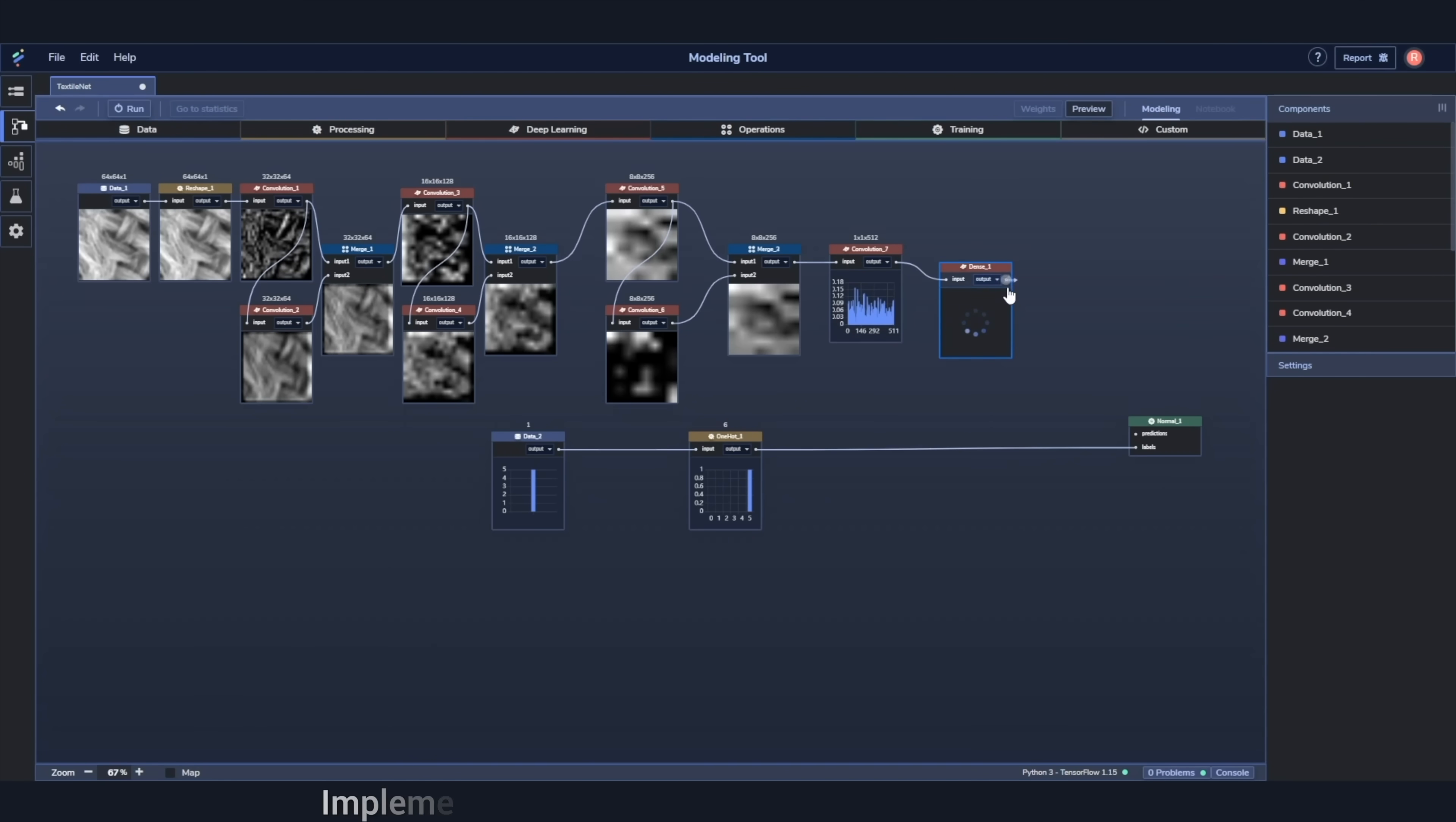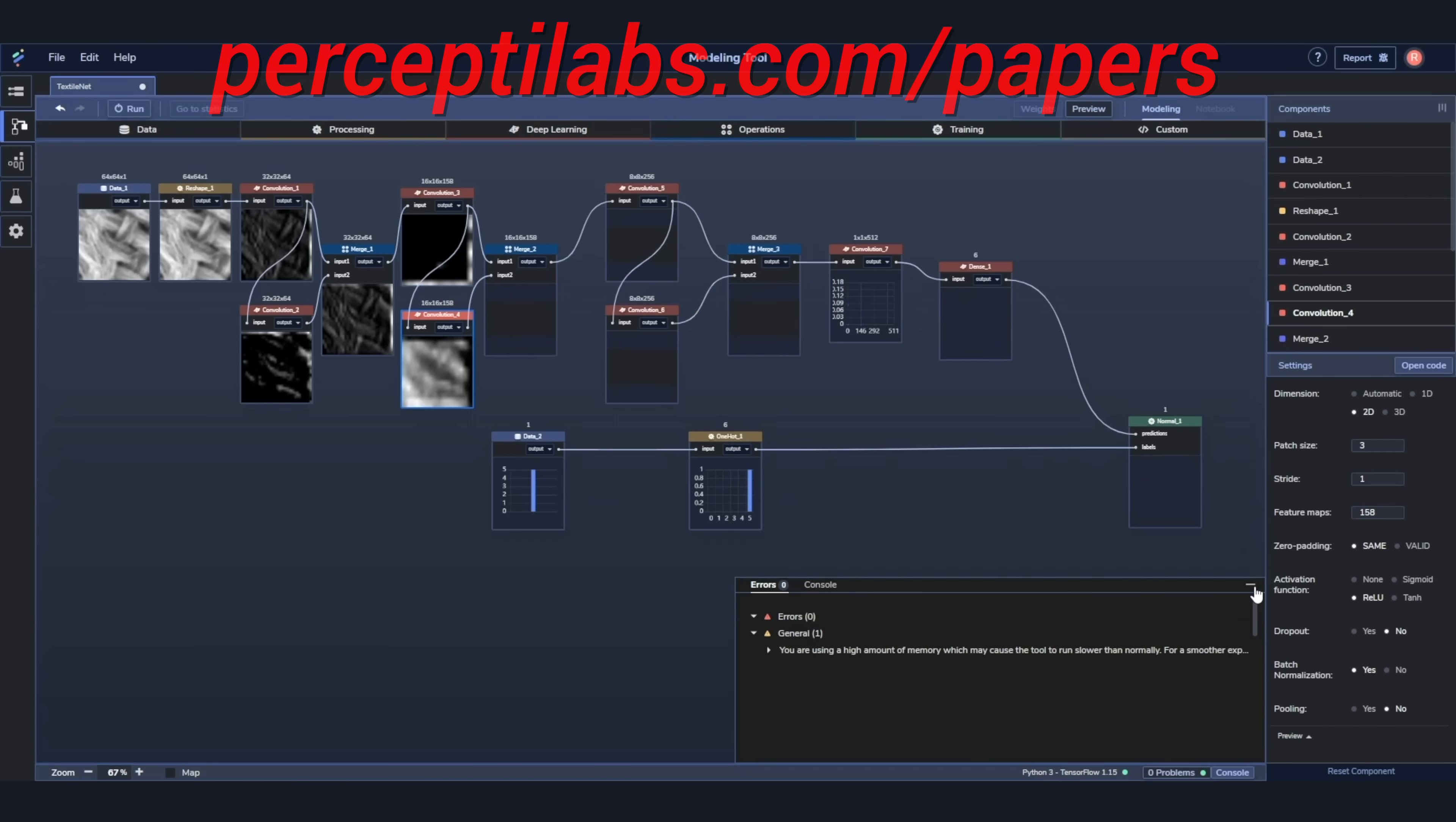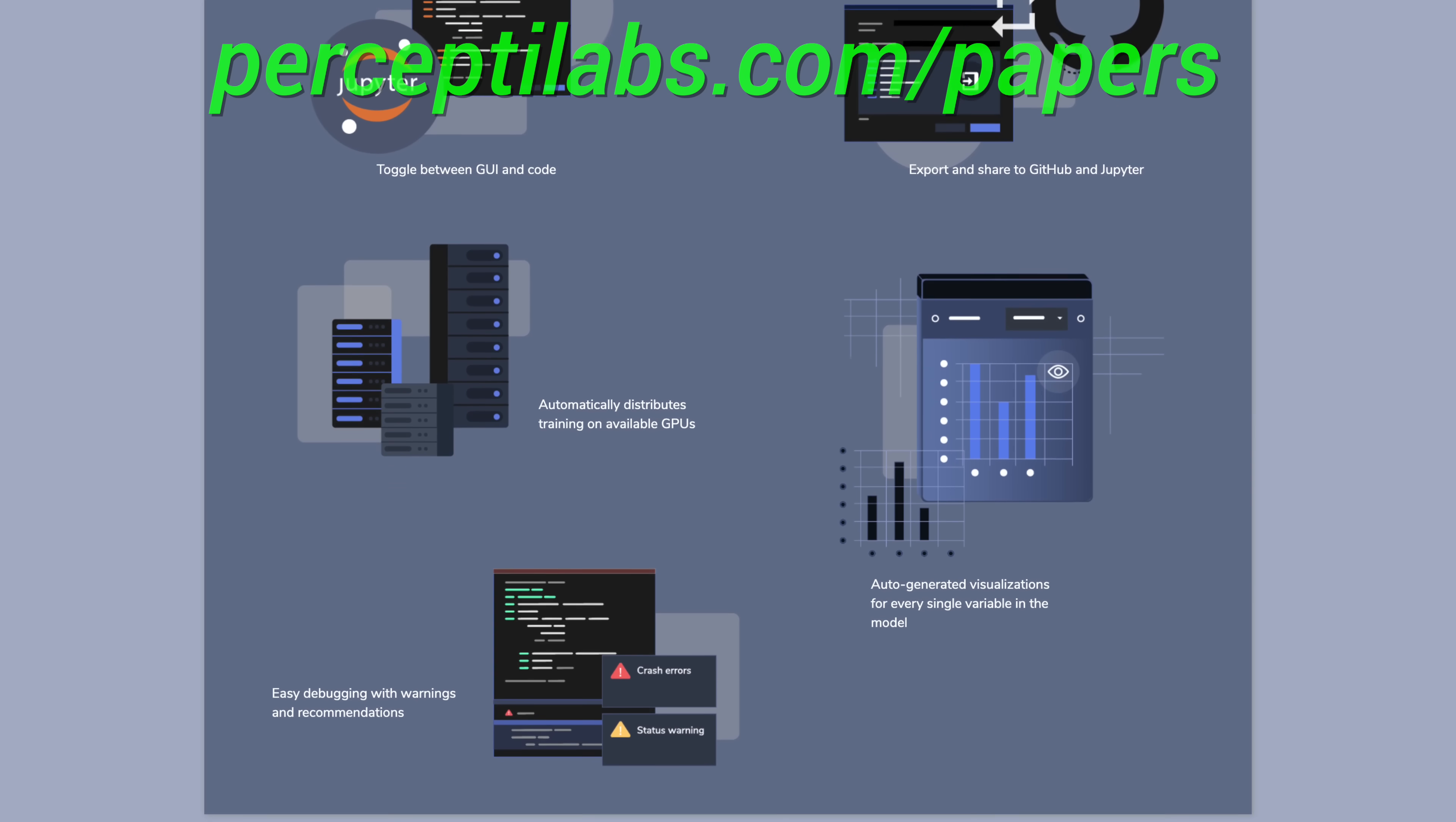PerceptiLabs is a visual API for TensorFlow carefully designed to make machine learning as intuitive as possible. This gives you a faster way to build out models with more transparency into how your model is architected, how it performs, and how to debug it. Look, it lets you toggle between the visual modeler and the code editor. It even generates visualizations for all the model variables and gives you recommendations both during modeling and training, and does all this automatically. I only wish I had a tool like this when I was working on my neural networks during my PhD years. Visit PerceptiLabs.com/papers to easily install the free local version of their system today. Our thanks to PerceptiLabs for their support and for helping us make better videos for you. Thanks for watching and for your generous support, and I'll see you next time!